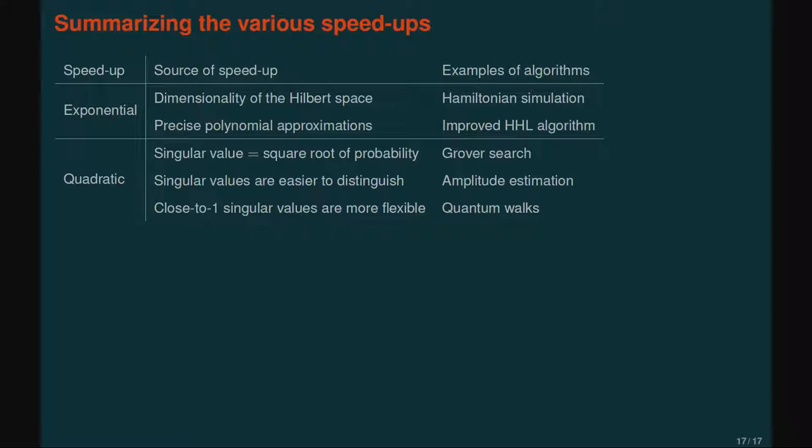Summarizing the various speedups: singular value transformation gives a table of achievable speedups. The dimension of the Hilbert space can give exponential speedups, present for example in Hamiltonian simulation. Precise polynomial approximations can give exponential improvements in precision, present in the improved HHL algorithm. Singular values correspond to square roots of probabilities, used in Grover's search and amplitude amplification. Singular values are easier to distinguish than probabilities by sampling, which underlies amplitude estimation. Singular values close to one are more flexible, as in quantum walks, giving quadratic speedups. I encourage you to try applying this technique to new problems. Thank you.